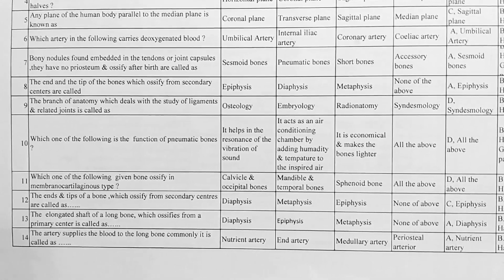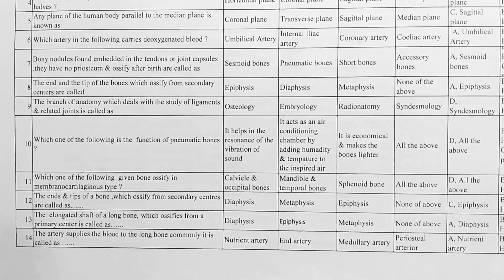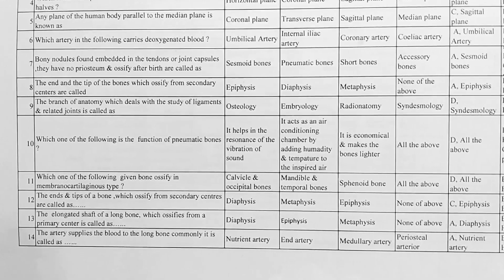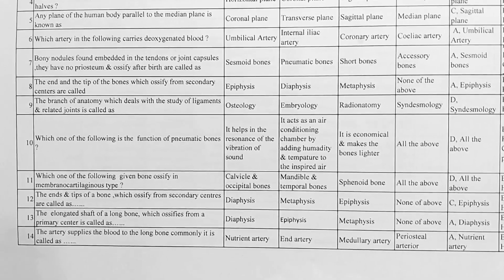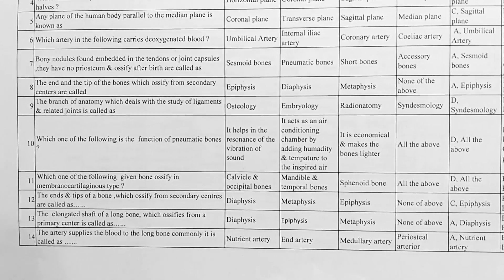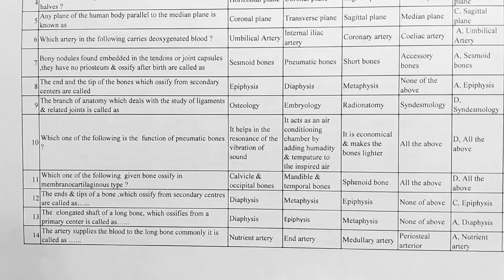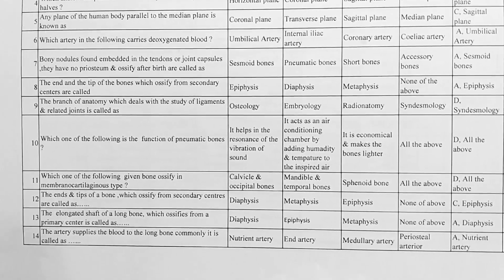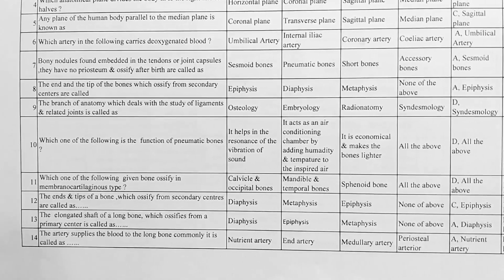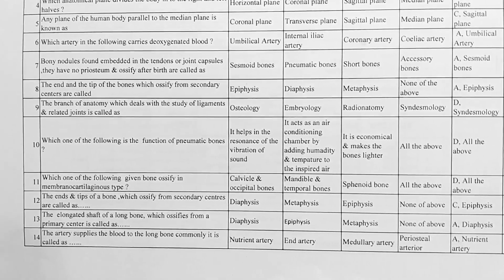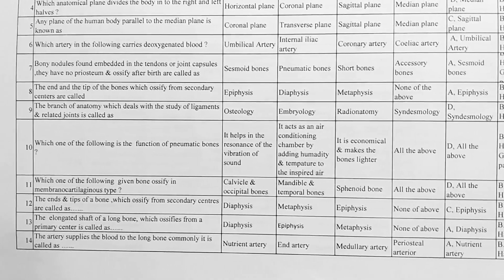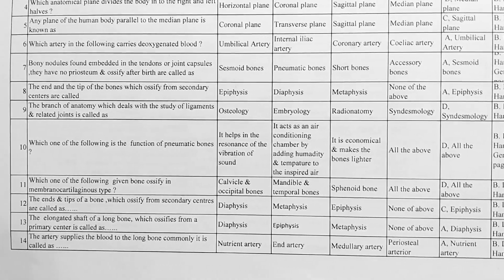Next, the branch of anatomy which deals with the study of ligaments and related joints is called — options: A. osteology, B. embryology, C. radianatomy, D. syndesmology. Correct answer is D, syndesmology.